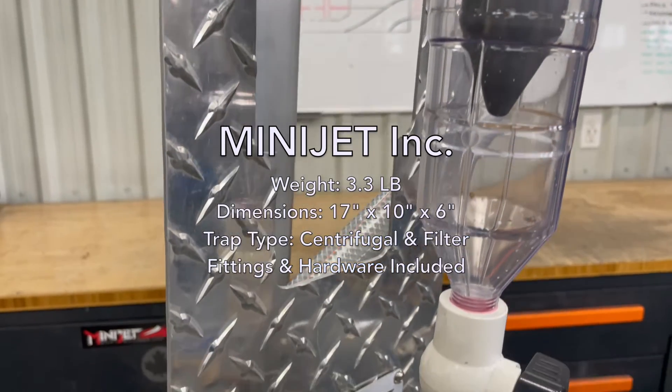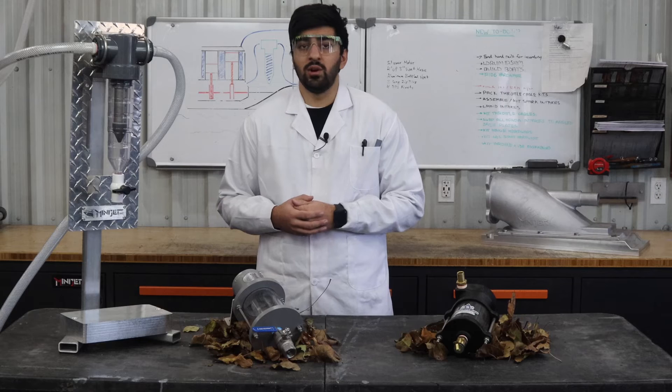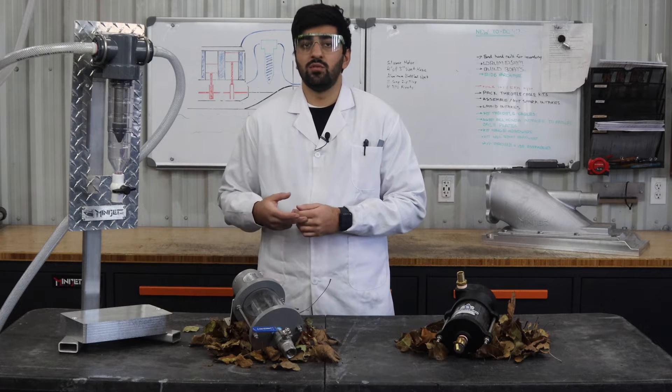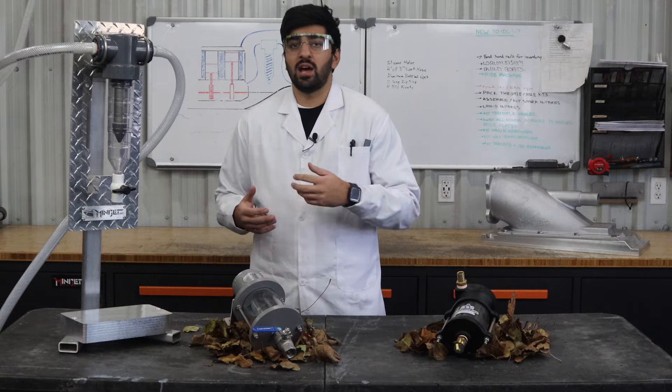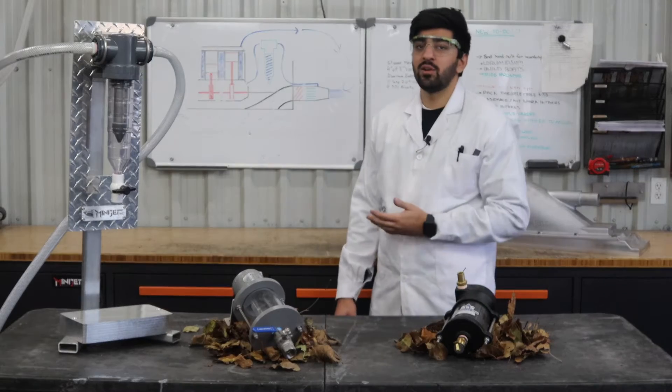One notable feature about this trap is that unlike the other traps that rely purely on gravity or centrifugal force to remove debris, the Mini Jet sand trap uses a combination of gravity, centrifugal force, and an additional stainless steel filter to catch even more debris and prevent it from reaching your engine.